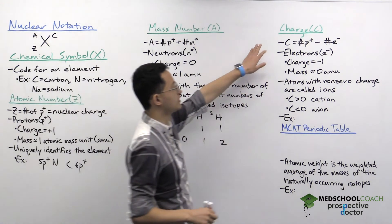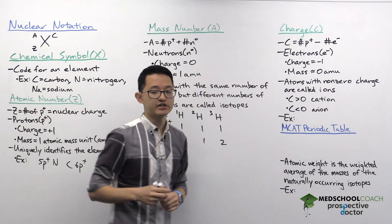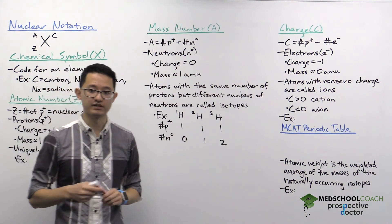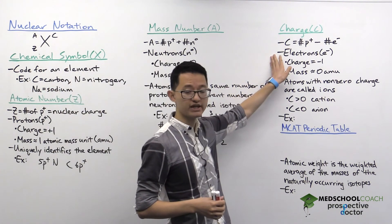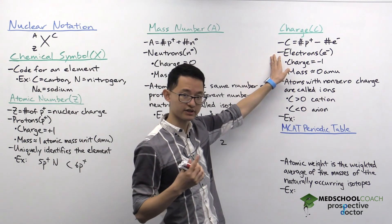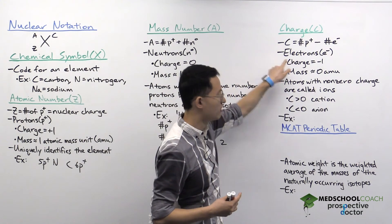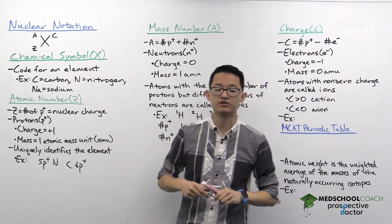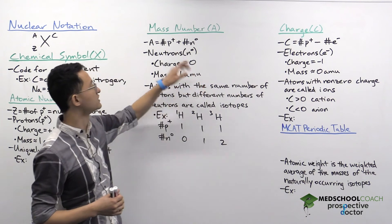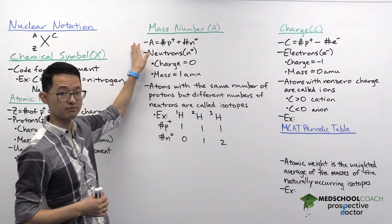Finally, let's take a look at C, which stands for charge. The charge of an atom is equal to the number of protons minus the number of electrons. Electrons are not located in the nucleus. Instead, these subatomic particles orbit the nucleus. They have a charge of minus one and a negligible mass compared to protons and neutrons. So that's actually why we don't include electrons in our equation for the mass number.